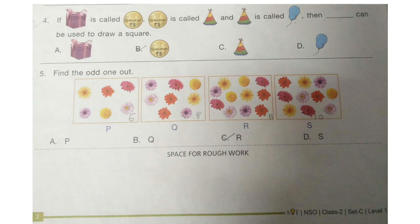Question 4. If gift box is called coin, coin is called birthday cap, and birthday cap is called balloon, then dash can be used to draw a square.